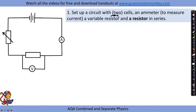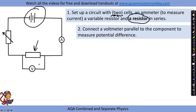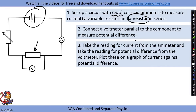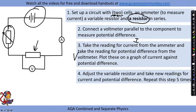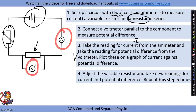Set up the circuit with cells, an ammeter, a variable resistor, and a resistor as the component in series. Connect a voltmeter in parallel to the component. Take the reading for current (I) from the ammeter and potential difference (V) from the voltmeter, and plot these on a graph. Adjust the variable resistor and take new readings. Repeat this five times to give five sets of readings for current and potential difference, providing a wide range of data.